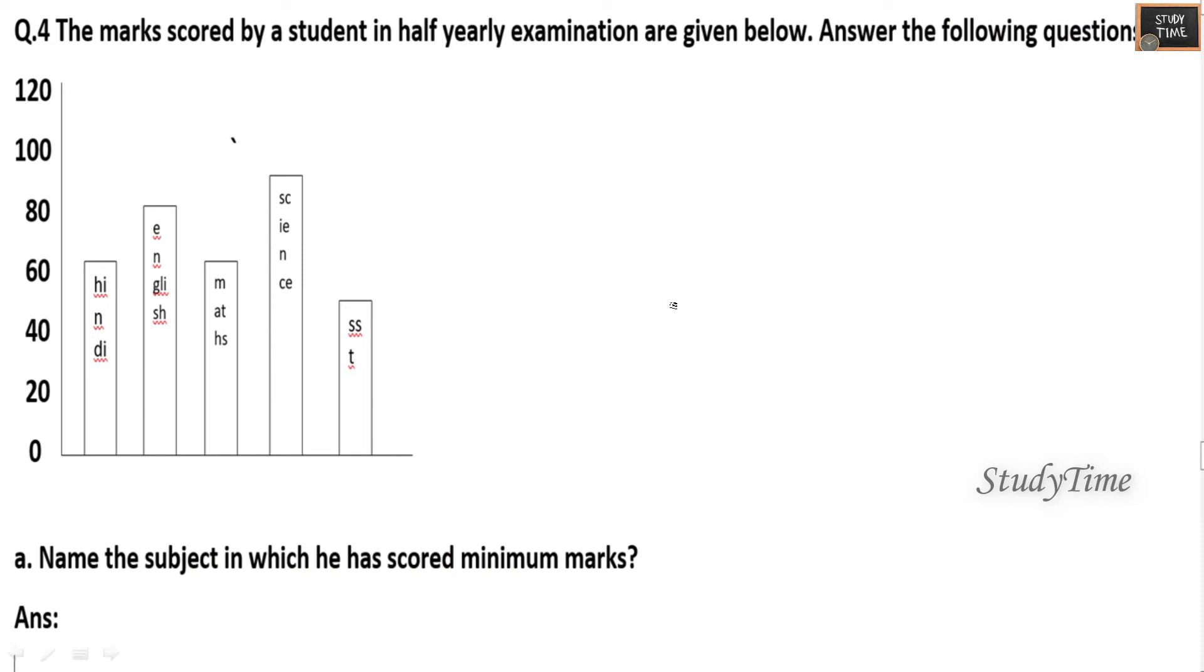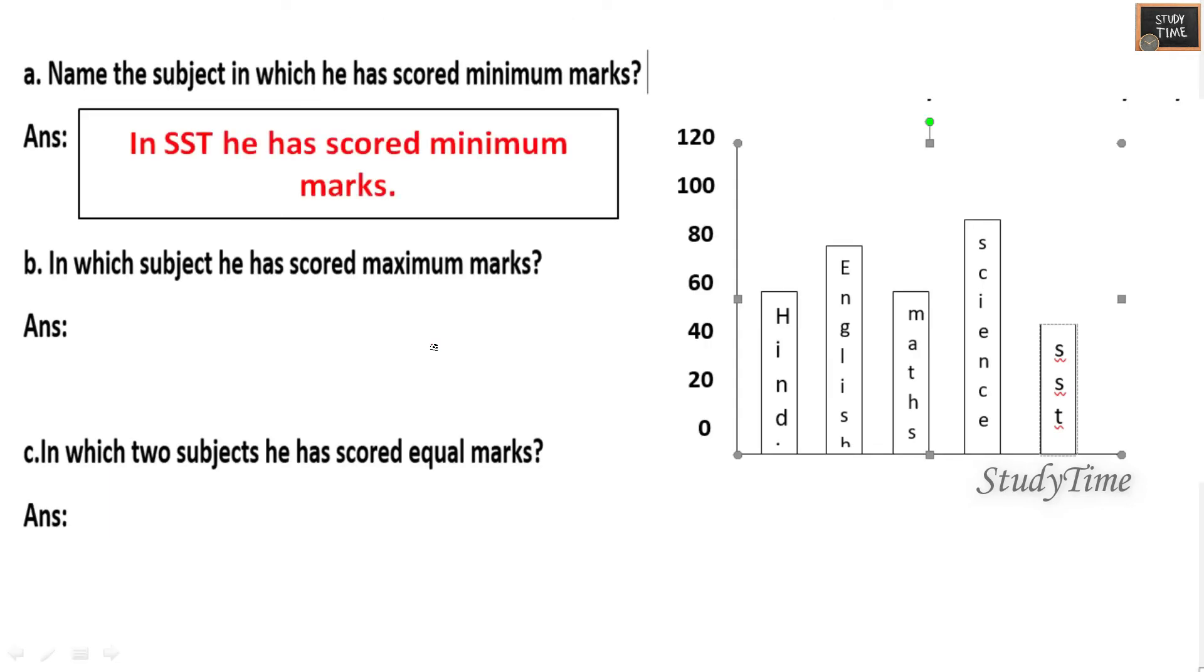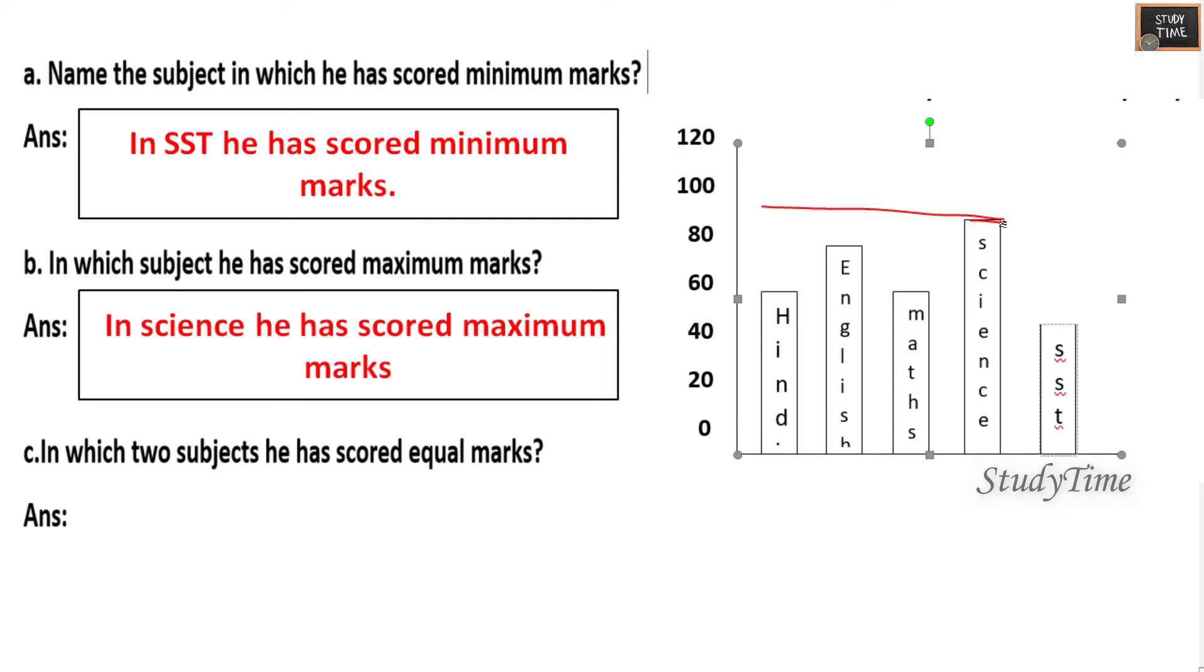Next, the marks scored by a student in half-yearly examination are given below. Answer the following questions. Hindi, English, Math, Science, SSD marks are given. Name the subject in which he has scored minimum marks. So minimum marks, it is SSD. In which subject he has scored maximum marks? This is the maximum marks, here it is Science. In which two subjects he has scored equal marks? So equal: Hindi and Math. So it is Hindi and Math he scored equal marks.